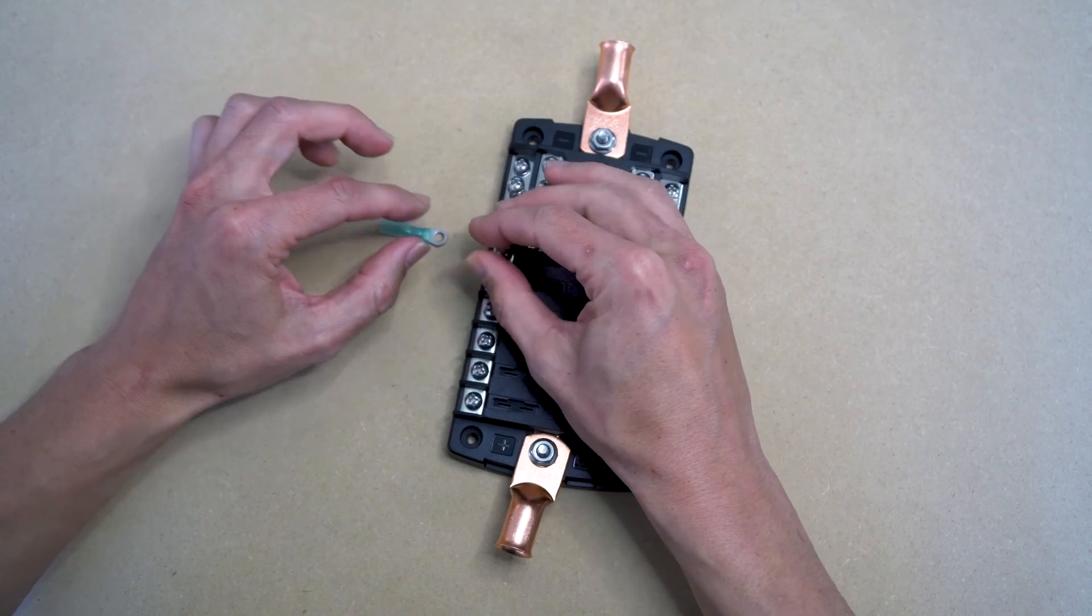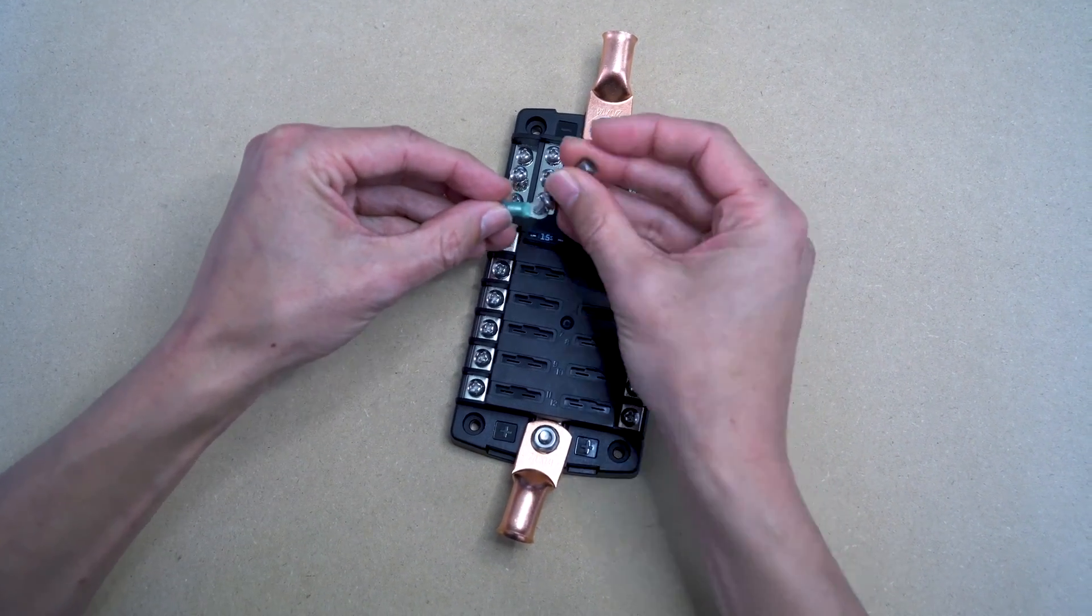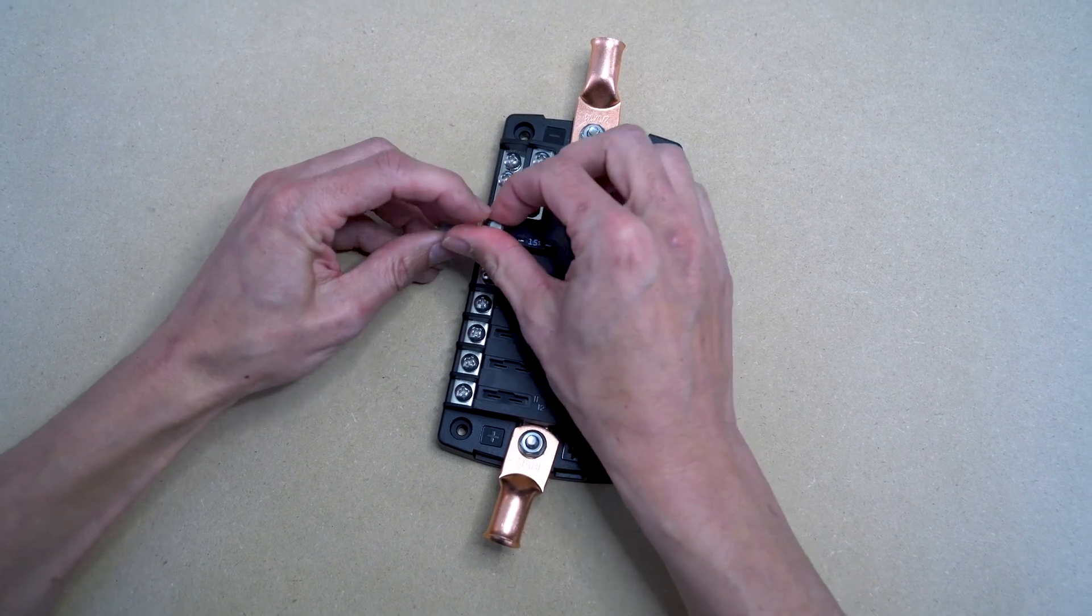We're going to remove one of the positive screws, place the screw through the ring, and put it back into place.